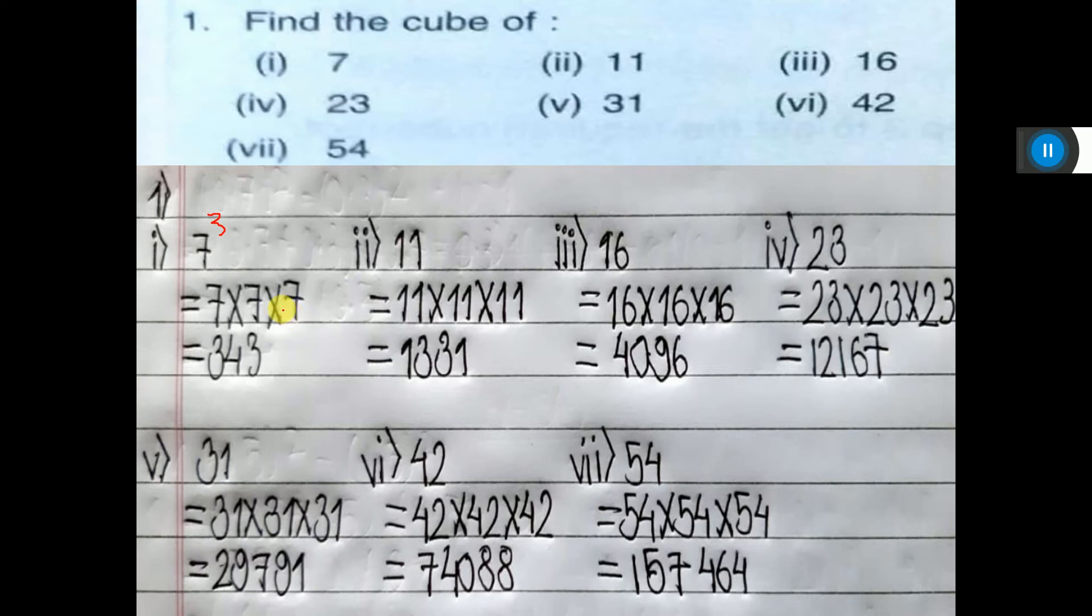It is totally wrong, because 7 is not equal to 7 into 7 into 7. First, you have to give cube. 7 cube is equal to 7 into 7 into 7. You multiply and get this answer.